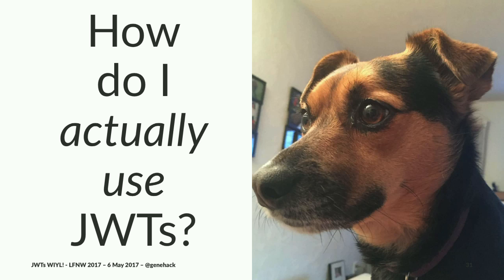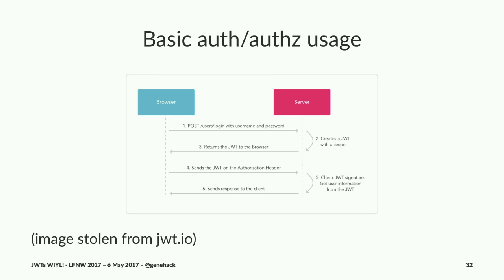So at this point Sammy perked back up and started asking: how do I actually use JSON Web Tokens? There are a couple of different ways because JWTs are intentionally flexible and agnostic about their use. One way you'd probably end up using them is as part of a fairly standard authentication/authorization workflow. Basically, you'd send a POST to your login endpoint with username and password, the server validates them and creates a JWT, sends it back to the client, and on subsequent requests the client sends the JWT back. The server validates the signature, pulls out the information, and generates the response.